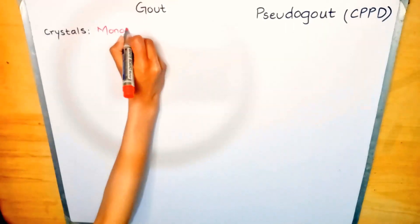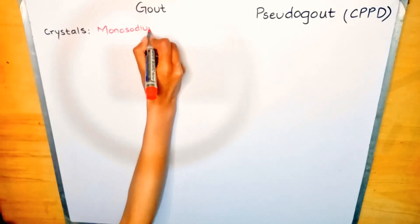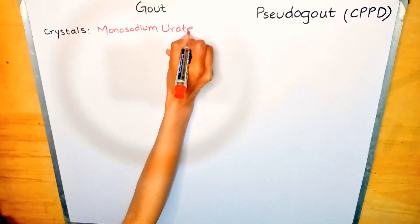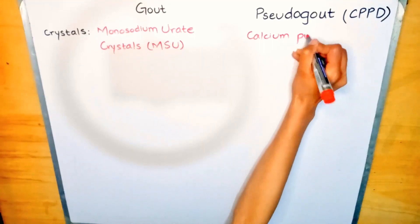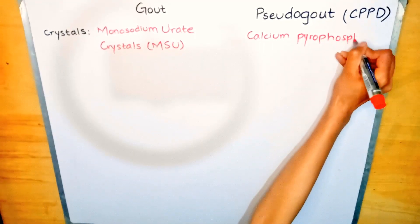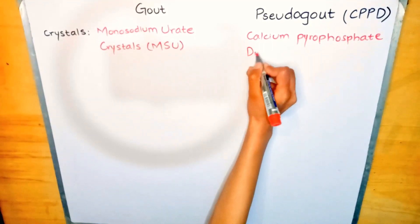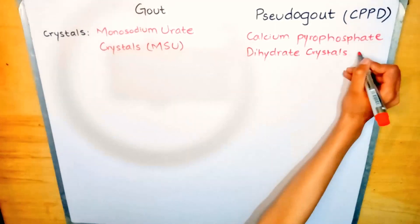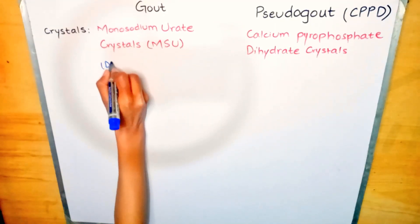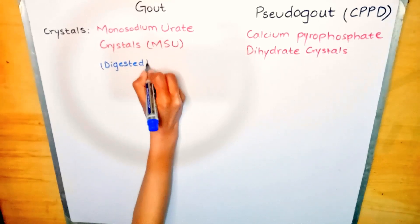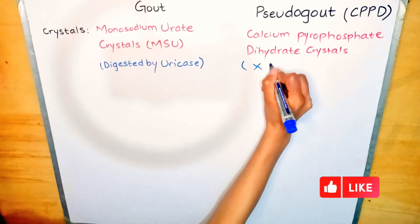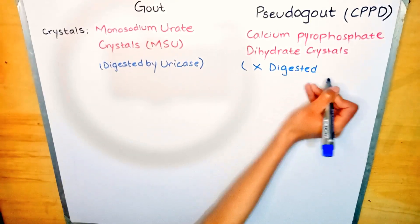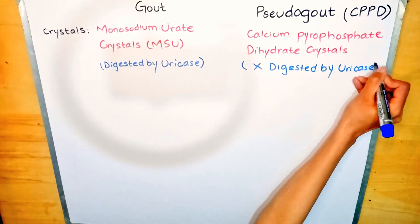The crystals accumulated in gout are the monosodium urate crystals, abbreviated as MSU. In pseudo gout, the crystals deposited in the synovial fluid are the calcium pyrophosphate dihydrate crystals. The crystals in gout can be easily digested by the uricase enzyme, while in pseudo gout, the calcium pyrophosphate dihydrate crystals cannot be digested by the uricase enzyme.